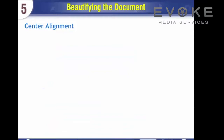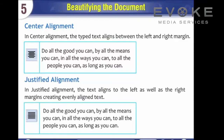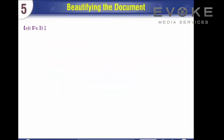In center alignment, the typed text aligns between the left and right margin. In justified alignment, the text aligns to the left as well as the right margins, creating evenly aligned text. Let's do it.